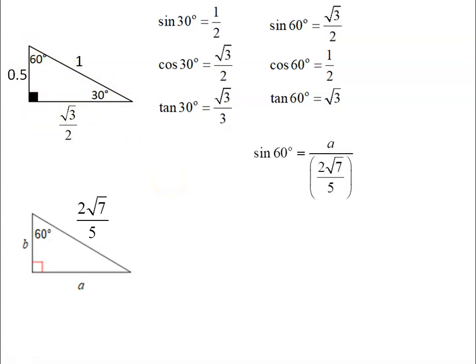But if you want to look for a, in this case, using 60, my a is opposite. And this 2 root 7 over 5 is the hypotenuse. So I would do sine. Sine of 60 is root 3 over 2.